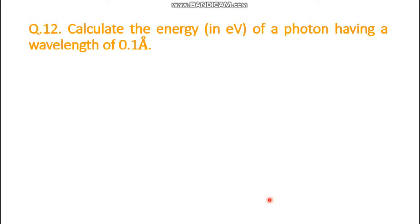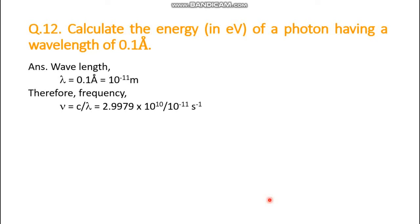Calculate the energy in electron volts of a photon having wavelength of 0.1 angstrom. The wavelength λ = 0.1 angstrom = 10⁻¹¹ meter. The frequency ν = c/λ. The accurate value of c is 2.9979 × 10¹⁰ meter per second, and λ is 10⁻¹¹ meter. Dividing velocity of light by wavelength gives the frequency in hertz.